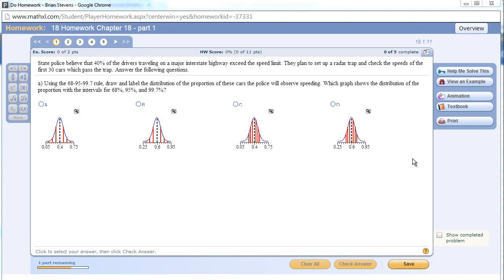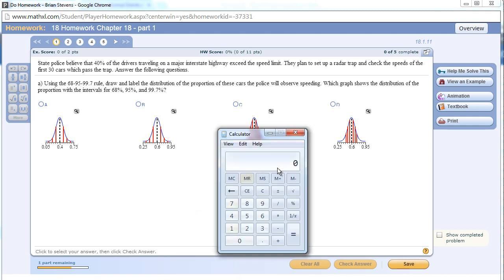For this problem we are looking at cars speeding on the highway. We need to make a sampling distribution for the proportion of cars that will be speeding when we sample 30 cars. One important thing to note is that the more we sample, the tighter the distribution gets. This is because the standard deviation of the distribution will be smaller.